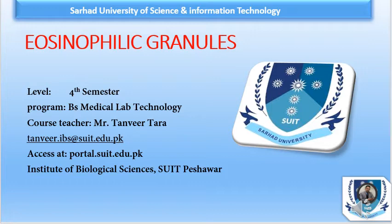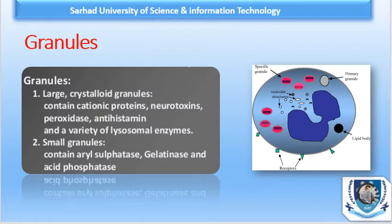Let's start the topic. Here we have the granules of eosinophil. As we learned about the granules of neutrophil — primary and secondary granules — here we have large crystalline granules and small granules. In eosinophil, large crystalline granules mostly contain cationic proteins, neurotoxins, peroxidase, antihistamine, and a variety of lysosomal enzymes. Small granules contain aryl sulfates, gelatinase, and acid phosphatase.